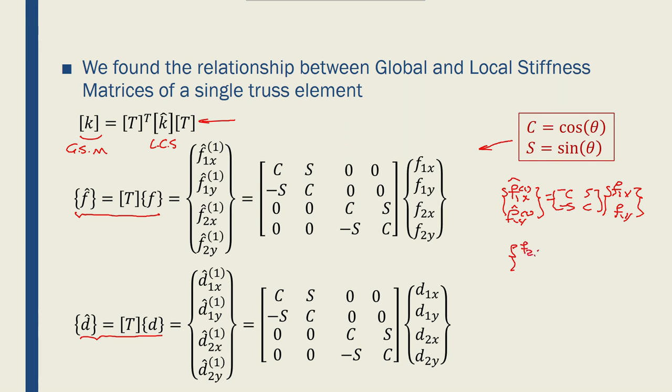So if I write f2x and f2y in the local coordinate system for a single element, would be cos sine minus sine cos. Here is f2x and f2y.